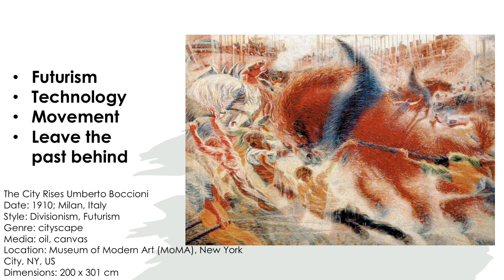Here, in The City Rises by Umberto Boccioni, we see a large horse in the foreground, looking to be fighting some people off. We also see some other horses in the painting, in the foreground and the background. We can see Boccioni's attempt to depict motion through the lines of the horse as well as the stillness in the buildings of the background.